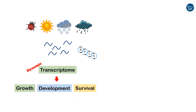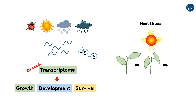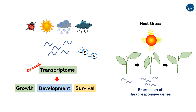For example, if a plant comes across heat stress, then it needs to produce something that can protect it against the stress. The plant does so by expressing heat-responsive genes, so the transcripts of those genes increase after heat stress. When conditions again become normal, the transcript level returns to normal. This is how the dynamic nature of transcriptome is very important.